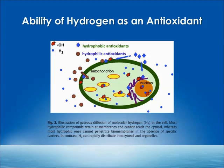Looking at the ability of hydrogen as an antioxidant compared to other antioxidants — whether hydrophobic or hydrophilic — they can't really get inside the mitochondria; only one or two go in, and they require active transport. These are the free radicals damaging the mitochondria. But you can see that hydrogen passes right through, and is able to take care of the free radicals inside the mitochondria and inside the nucleus very effectively.